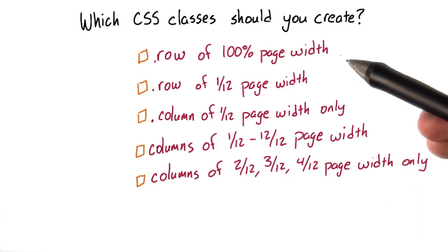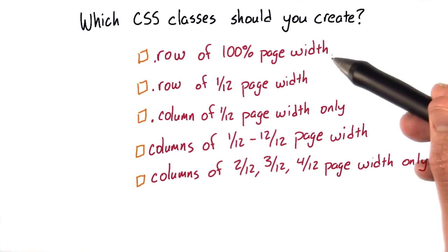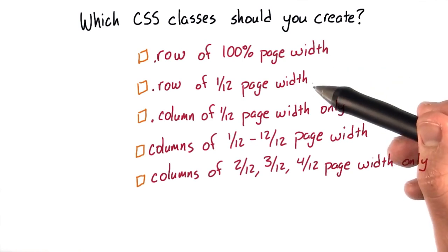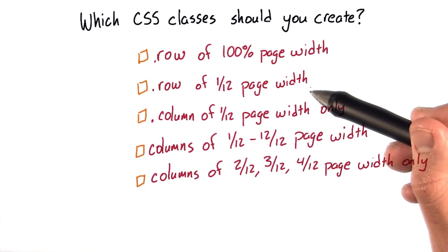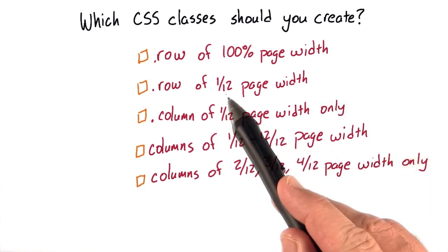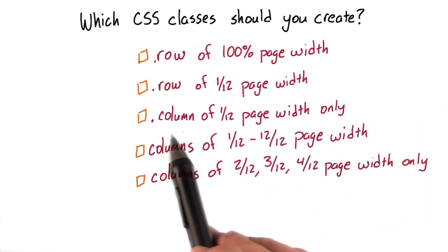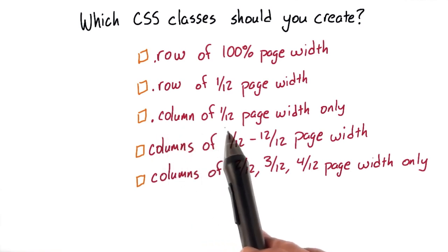Well, you need to create a CSS class that includes a row of 100% page width, a CSS class for a row of 1/12th of the page width. Remember, 12 here is coming from the number of columns. Will we only need to create one column class of 1/12th of the page width to define our columns?